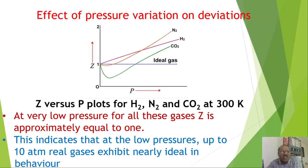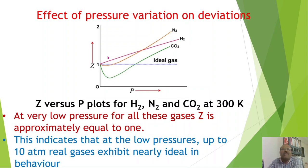Now we look at the effect of pressure variation on deviations. Real gases like nitrogen, hydrogen, and carbon dioxide are non-ideal gases showing deviations from the ideal gas. On the graph, a blue dotted line indicates ideal gas behavior where Z = 1. When Z is greater than 1, there is positive deviation; in some cases the curve dips below the ideal line before rising again.